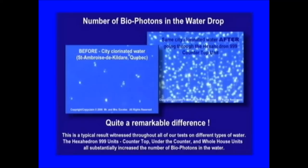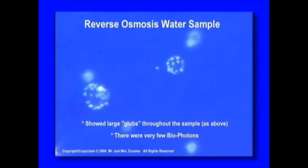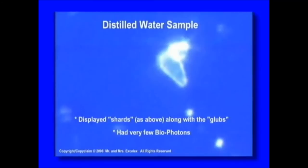Compare the number of biophotons in a drop of city chlorinated water before and after going through the Hexagon 999 unit - quite a remarkable difference. This is a typical result throughout all of our tests. The Hexagon 999 units - countertop, under the counter, and whole house - all substantially increase the number of biophotons present in the water. Reverse osmosis water contained very few biophotons, as did distilled water - which contained shards along with crystallized structures. When distilled and reverse osmosis water was put through the Hexagon 999 unit, these shards and crystallized structures were broken down or eliminated, and there was a substantial increase in biophotons.